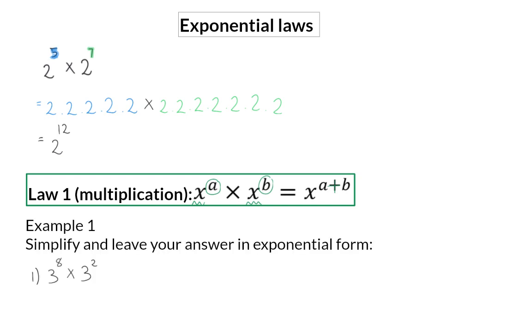Example 1. Simplify and leave your answer in exponential form. In the first example, we have 3 to the power of 8 times 3 to the power of 2. That means we have 8 3's that should be multiplied by another 2 3's. Using our exponential law, we can simply say 8 plus 2 in the exponent, and that will give us an answer of 3 to the power of 10, meaning that 10 3's are being multiplied.